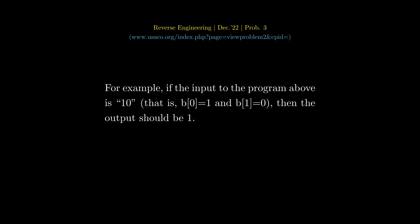For example, if the input to the program above is 1 0 — that is, b0 is 1 and b1 is 0 — then the output should be 1.